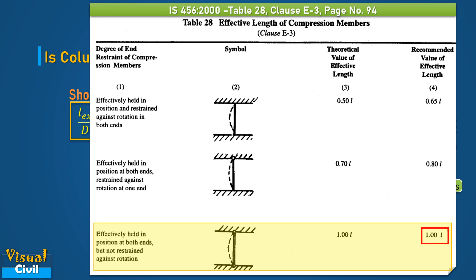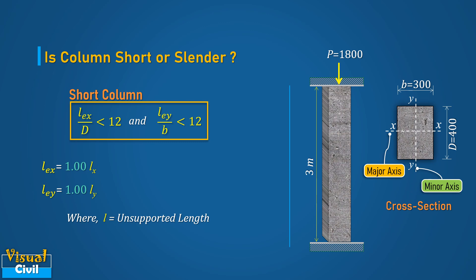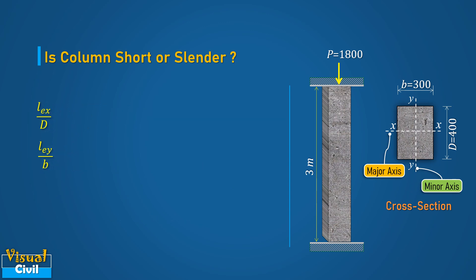Select the recommended effective length equal to 1.0 times L, where L is the unsupported length. Based on this, compute effective lengths LEX and LEY. The unsupported lengths LX and LY are both taken as 3 m. Putting the values of effective length, depth, and width of the column, we get LEX by D equal to 5 and LEY by B equal to 6.6. Both slenderness ratios are less than 12. Hence, the column is a short column.